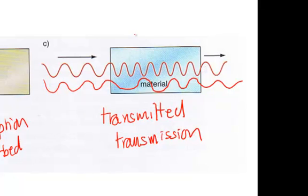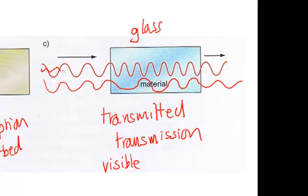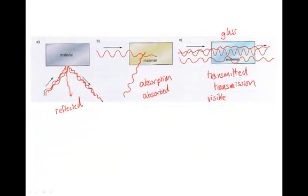An example of transmission would be glass and visible light. We know that visible light can come along and go straight through the glass to the other side, which enables us to see what's on the other side of a sheet of glass. We could not see through a piece of wood because the light radiation would be absorbed by the wood.